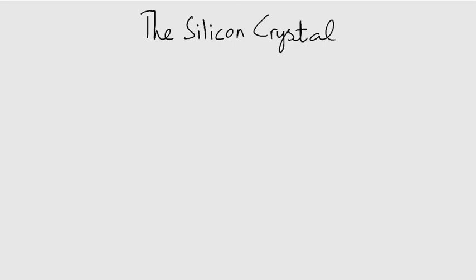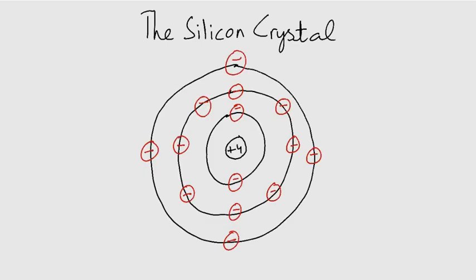Let us look at the atom of silicon in this Bohr diagram. It has four valence electrons in its outer shell.